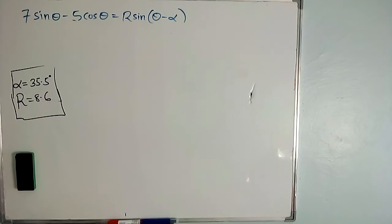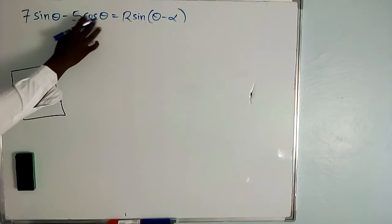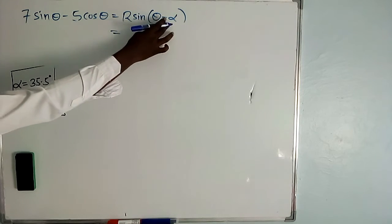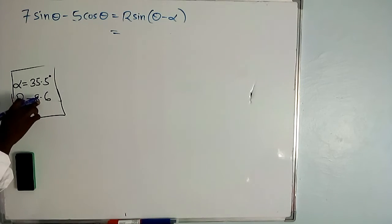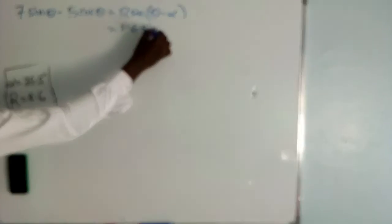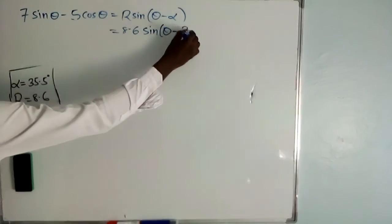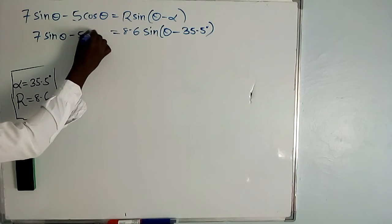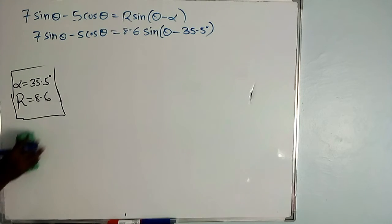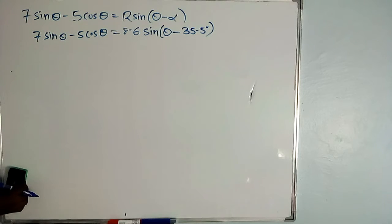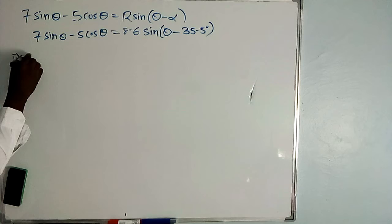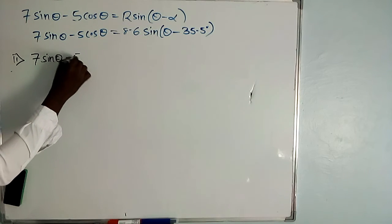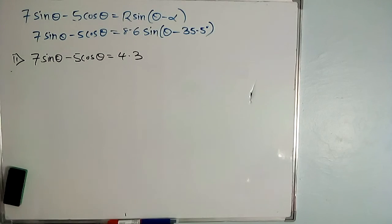So having found R = 8.6 and alpha = 35.5 degrees, our equation 7 sin theta minus 5 cos theta is now expressed in the form R sin(theta minus alpha) as: 8.6 sin(theta minus 35.5 degrees).